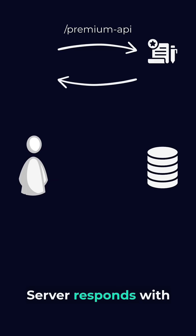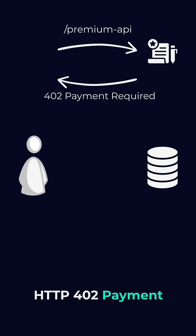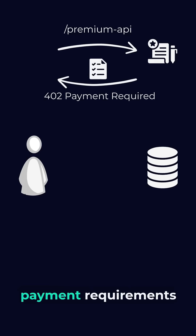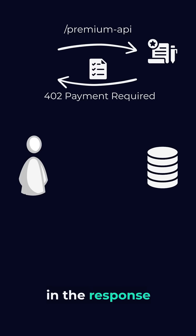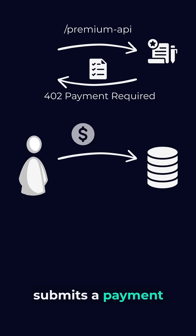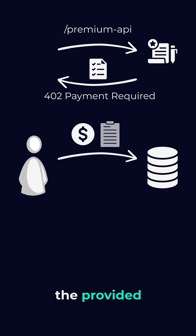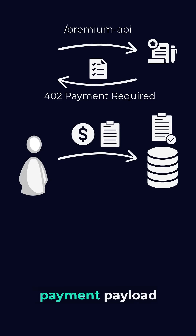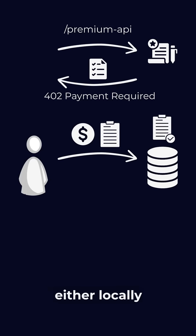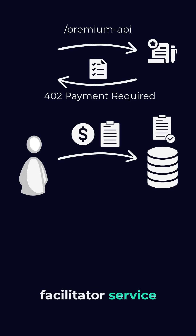The server responds with HTTP 402 payment required, including the payment requirements in the response body. The client then prepares and submits a payment payload based on the provided requirements. The server verifies the payment payload, either locally or through a facilitator service.